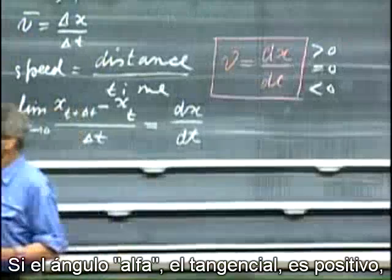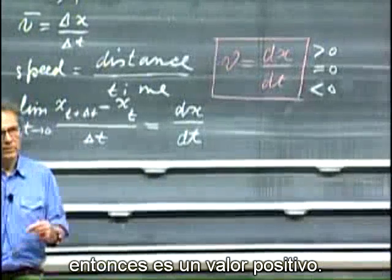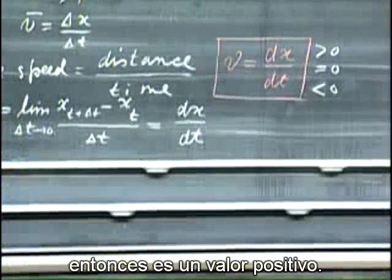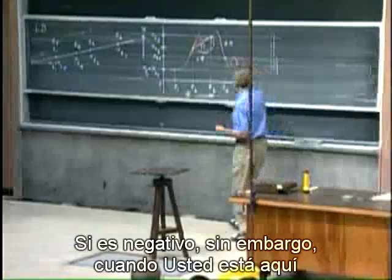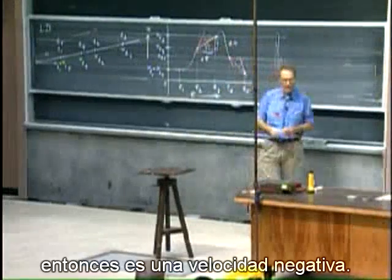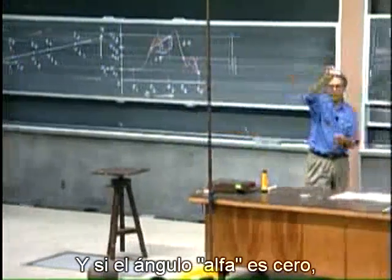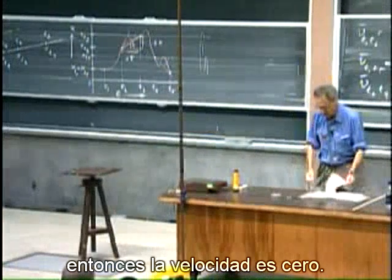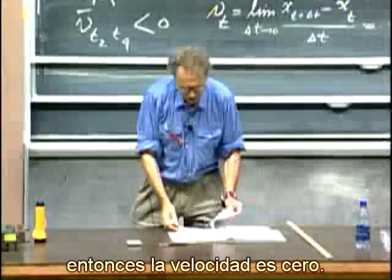If the angle of alpha, the tangential, is positive, then it is a positive value. If it is negative, however, when you're here, then it is a negative velocity. And if the angle of alpha is zero, then the velocity is zero.